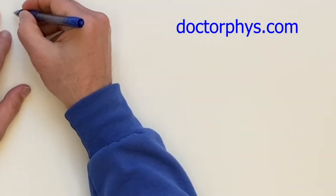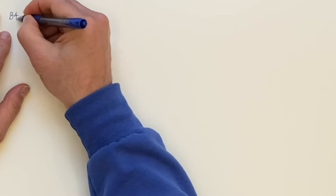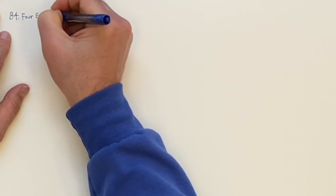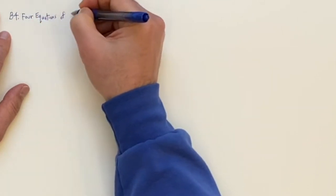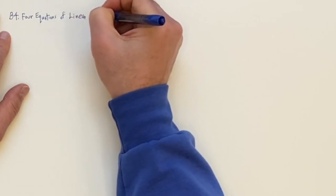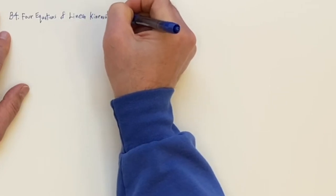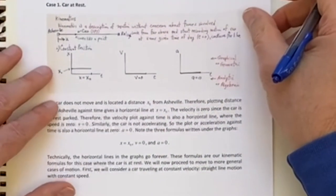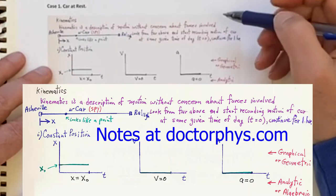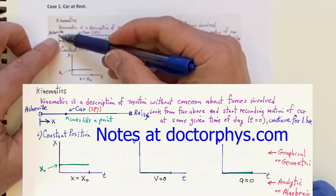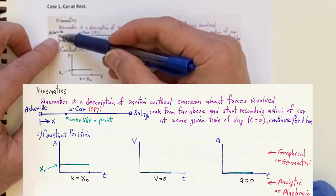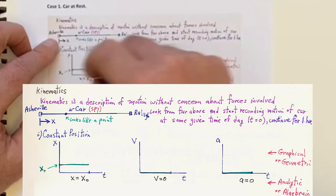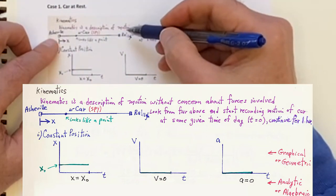Now we move to the heart of this chapter, B4, the four equations of linear kinematics. These notes I'm going to show you I made back in 1978 when I first started teaching at UNC Asheville. I picked Asheville as the origin, the zero point for distances. We're going to measure from Asheville and go perfectly to the east — Route 40 kind of does that, and we're going to pretend it does it precisely to the east.